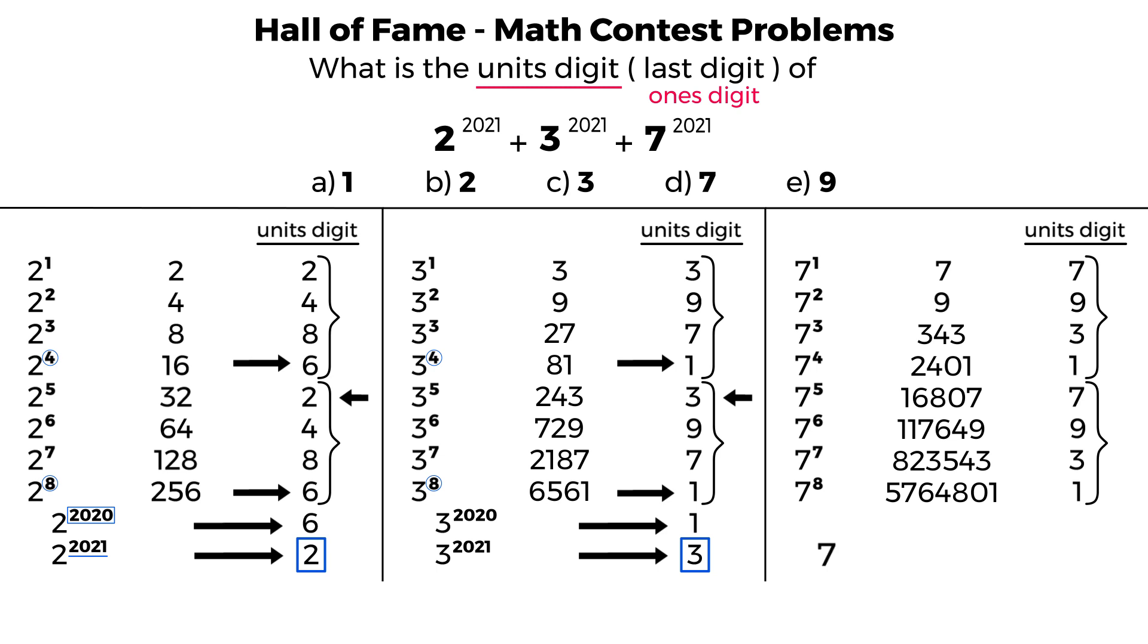In a very similar way, 7 to the power of 2021. Is 2021 divisible by 4? Unfortunately, it is not. Because if it was, it would help us. Because we know that 4 as the exponent gives you a units digit of 1. And any multiple of 4, such as 8, also gives you a units digit of 1. 2020 is a multiple of 4. And therefore, its units digit is 1. Therefore, the units digit for 7 to the power of 2021 will basically be the next one in this pattern, which is 7. So there you have it.